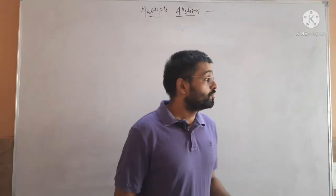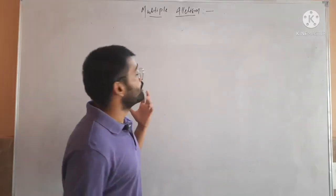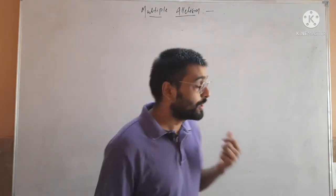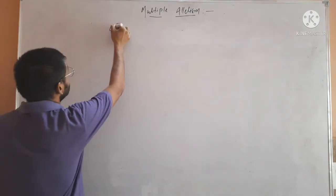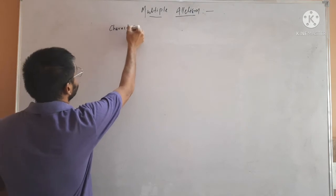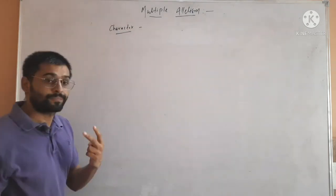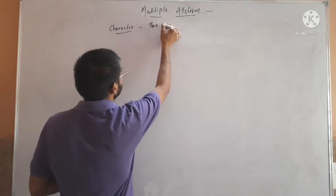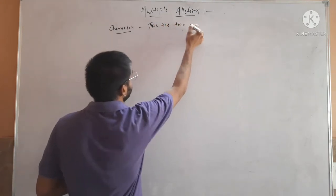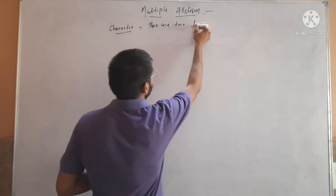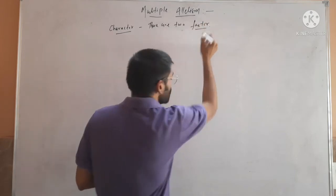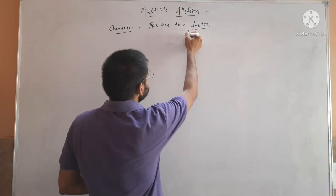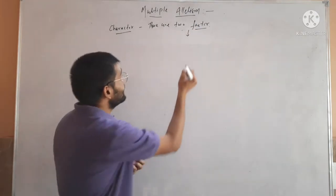Hello friends. In this video we will talk about multiple allelism. We know that for most genetic systems, for a character, there are two factors — two alleles.